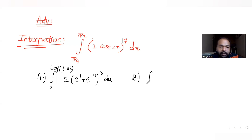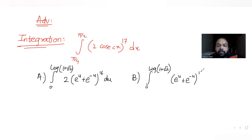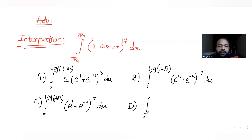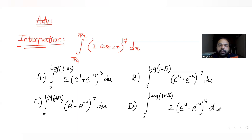The second option has limits from 0 to log(1 + √2) with the expression (1/(e^u + e^(-u)))^17 du. The third option has limits 0 to log(1 + √2) with the expression (1/(e^u - e^(-u)))^17 du. The last option has limits 0 to log(1 + √2) with the expression (1/(e^u - e^(-u)))^16 du. We need to figure out which of these four options the given integral transforms into.